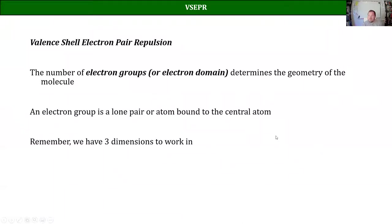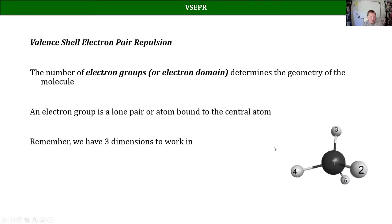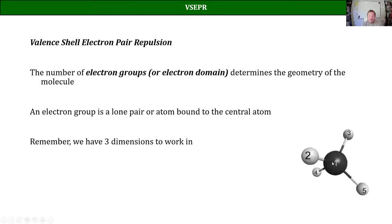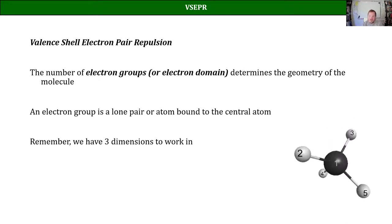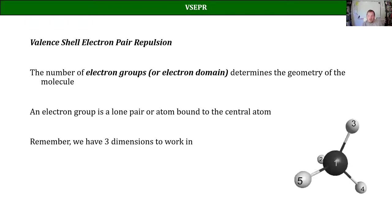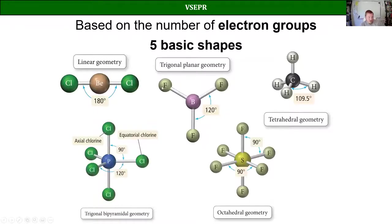In order to differentiate between different shapes verbally, without having to draw them or have a model every time, we give them different names. This gives us a good way of visualizing what a molecule looks like in three dimensions, since drawing in 3D takes artistic skill — something chemists are notoriously short on. These shapes are based around five basic geometries. If you have two things attached to a central atom, we just call it linear.